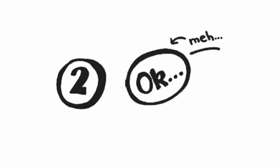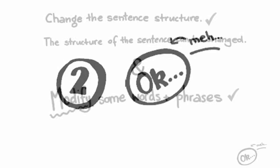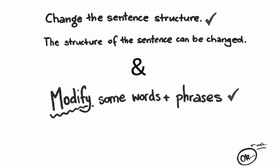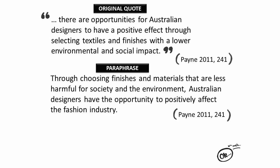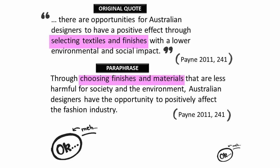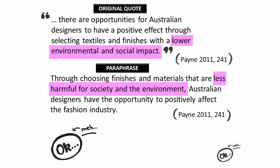Secondly, I'll show you a way that is acceptable to use. Remember, it's an okay way of paraphrasing, but it isn't sophisticated. A good tip for paraphrasing a quote is to change the sentence structure. When doing this, you'll need to modify some of the words and phrases so little combinations of words don't match the original quote. This is what happens when I apply this method to my quote — it's okay, I could use it in my assignment. To compare, you can see that I have changed 'selecting textiles and finishes' to 'choosing finishes and materials,' and this information is now at the start of my paraphrase whereas it was previously near the end of the quote.